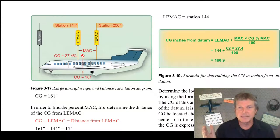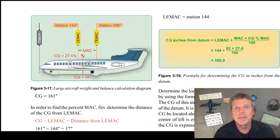What if I know what the percent MAC is? How do I get it back to a station number, the numbering system for the airplane in inches? Okay, so here's that same formula. CG inches from datum, that is the leading edge MAC plus the mean aerodynamic chord times the CG percent MAC divided by 100. So if we take 144, that was where the leading edge was. We take 62, that was the length of the mean aerodynamic chord. We take 62 times 27.4 divided by 100, we get 160.9 inches on the datum.